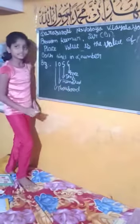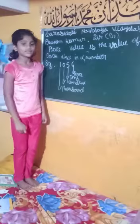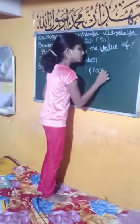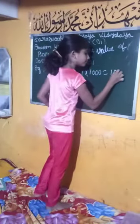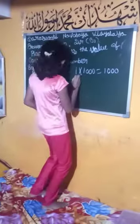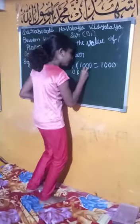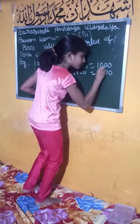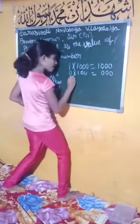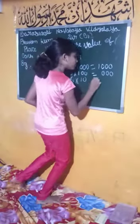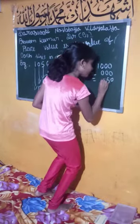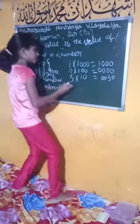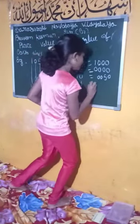Let us find the place value by multiplying each digit. 1 into 1,000 equals 1,000. 0 into 100 equals 0. 5 into 10 equals 50. 6 into 1 equals 6.